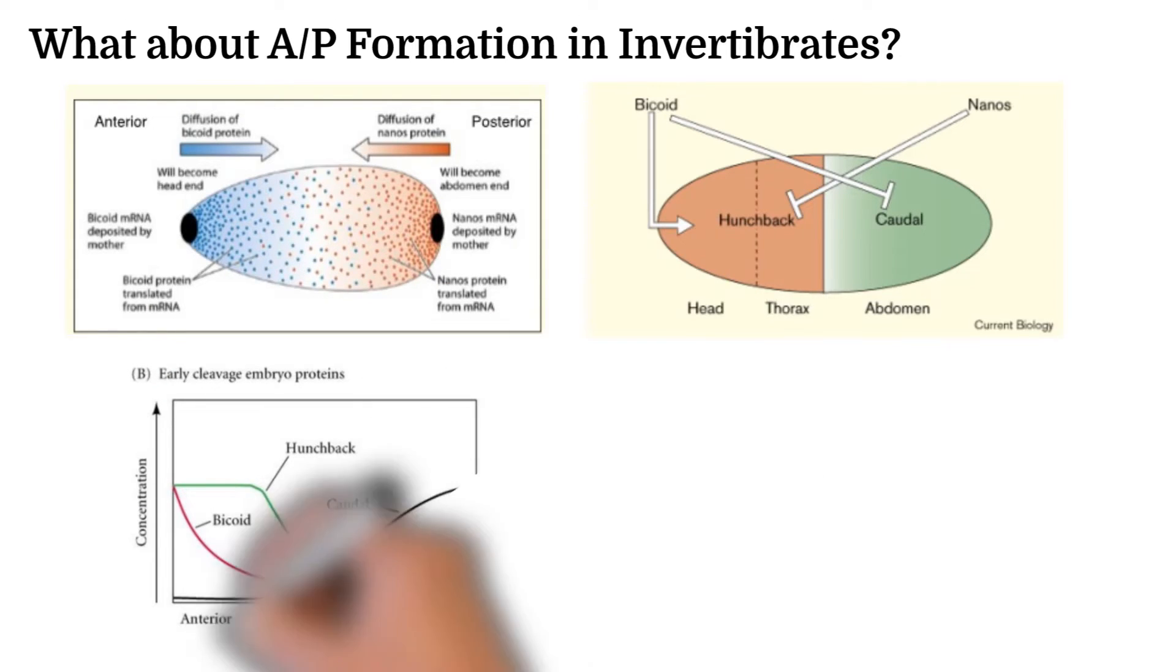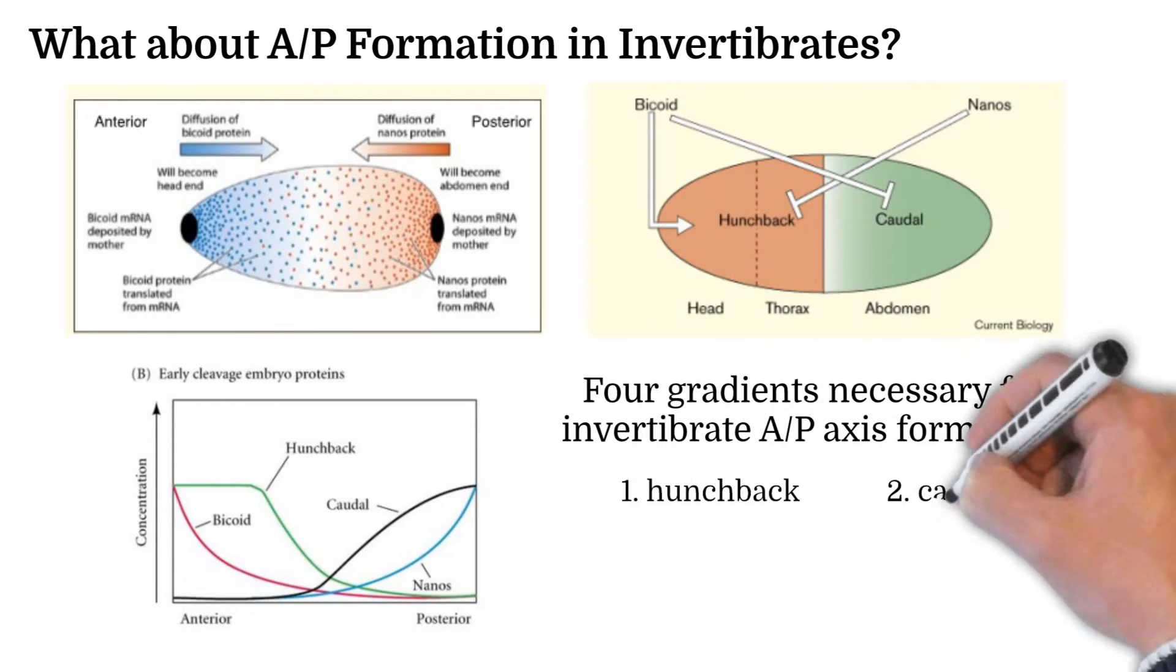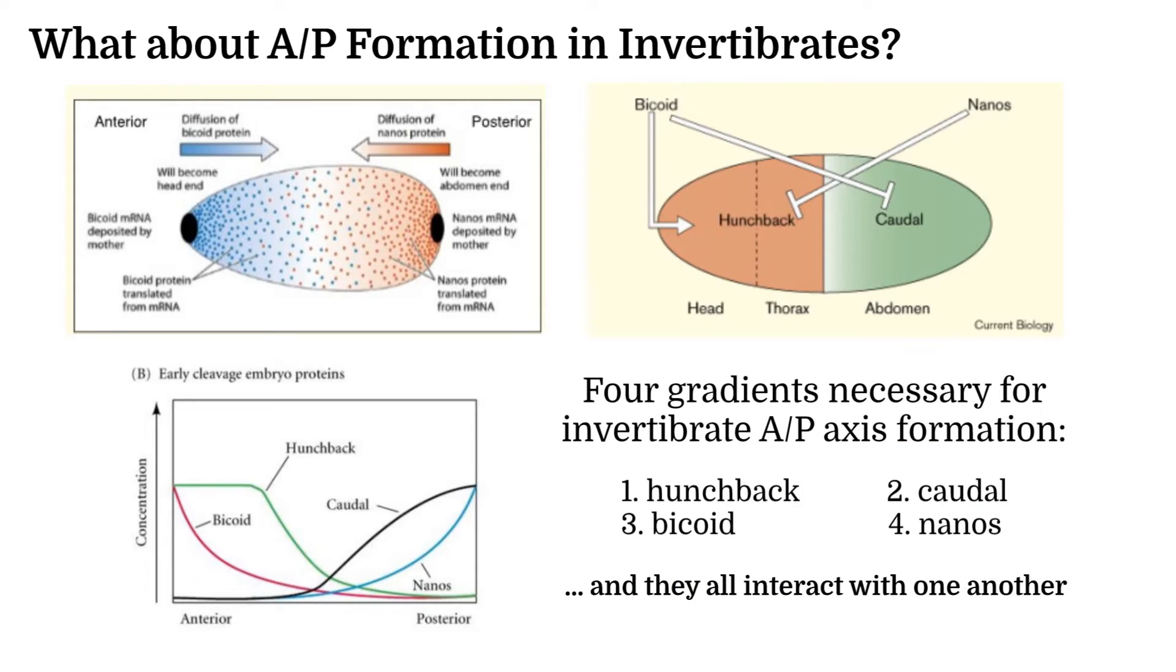Bicoid has a high concentration towards the anterior and works to promote hunchback while also inhibiting caudal. Nanos is highly concentrated on the posterior side of the embryo and directly inhibits hunchback. All four of these gradients and the checks and balances they produce force a very clear divide between the posterior and anterior sides of the embryo, and any faults in these result in a mutated organism.